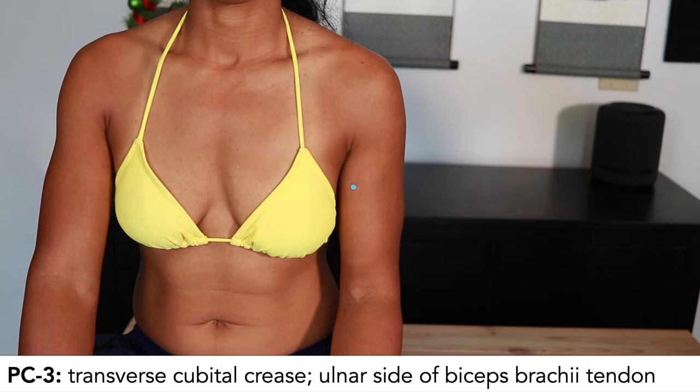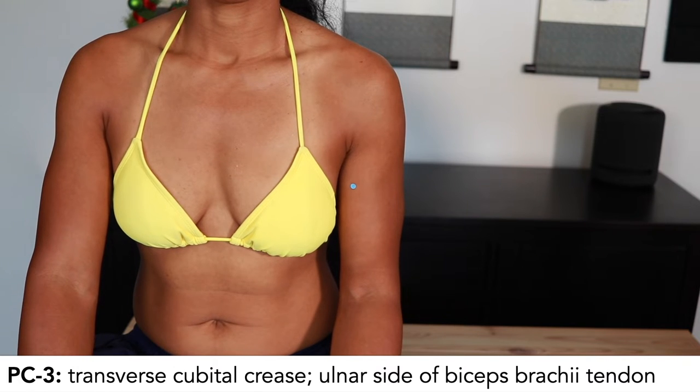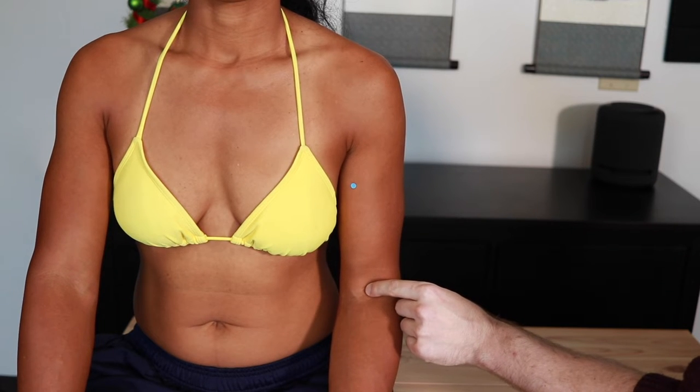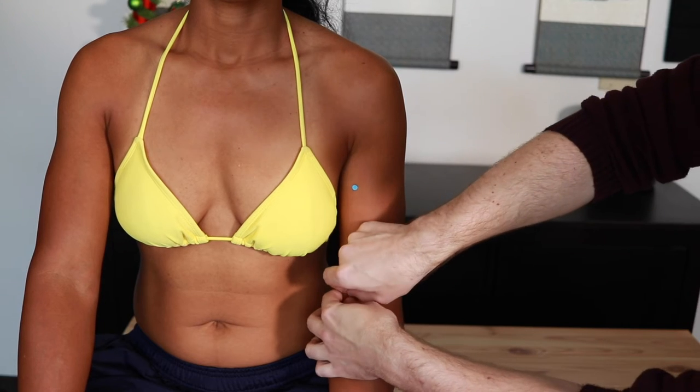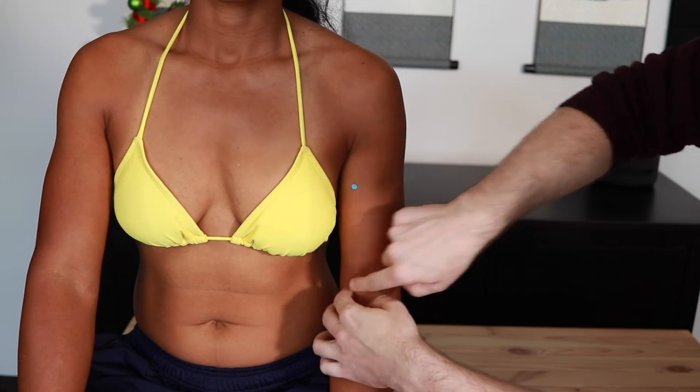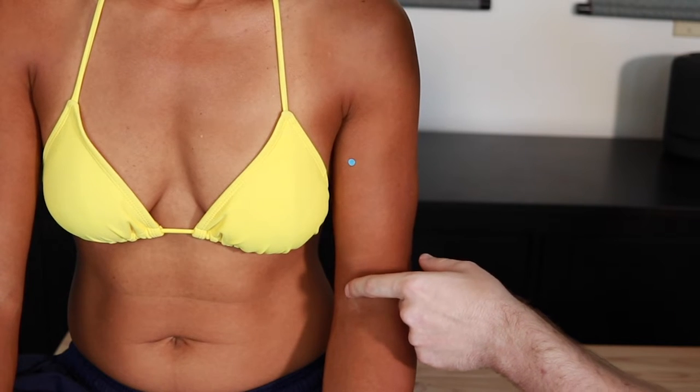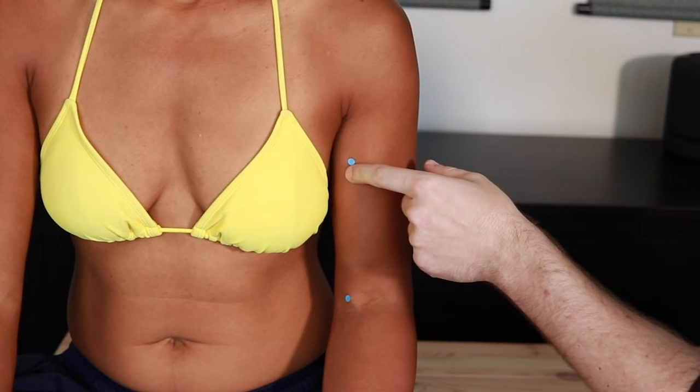Pericardium 3 is at the transverse cubital crease on the ulnar side of the biceps brachii tendon. So we find the tendon on the radial side is Lung 5. On the ulnar side is pericardium 3. And so we have pericardium 3 on the ulnar side, and then we just come straight up for pericardium 2.